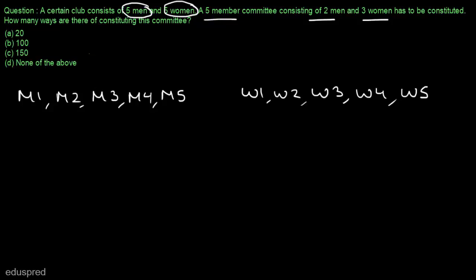Now, note that this is a case of combination and not permutation. In this case, the ordering or the arrangement of men and women does not matter. So for example, if out of these 5 men,